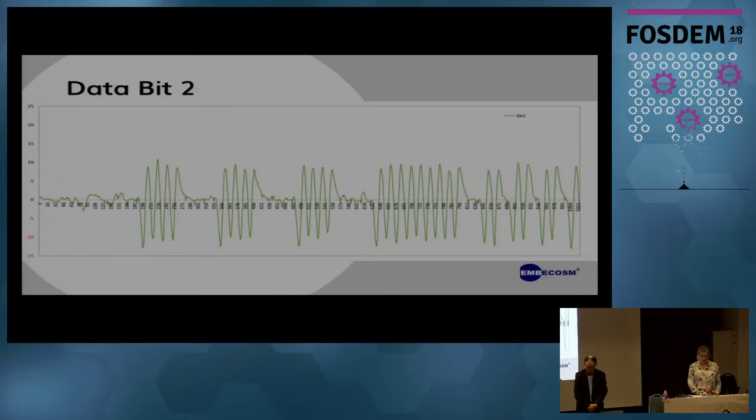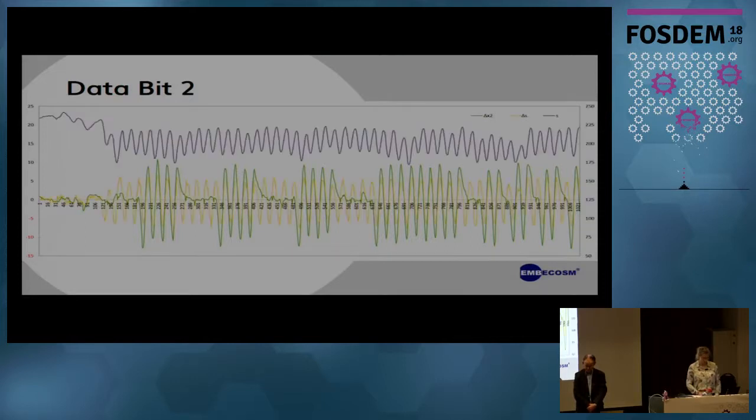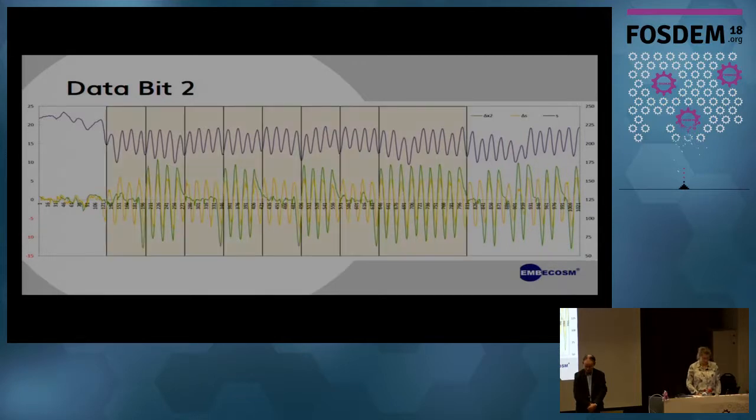We now have everything we need to determine if data bits are set. This is the deltas for the sensor for data bit two. We overlay the sprocket signal with the delta. Each time we find a sprocket hole, we look to see whether the delta for data bit two has gone below minus 3.5 since the last sprocket minimum. If it has, we have a dark hole. And if not, we don't. We see that for data bit two, we have a sequence of four zeros, four ones, four zeros, four ones, four zeros, four ones, four zeros, then nine ones, and so on.